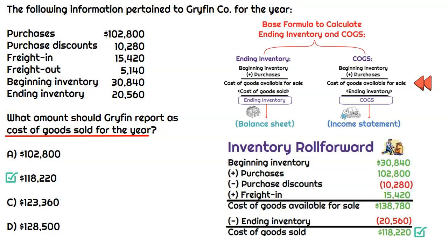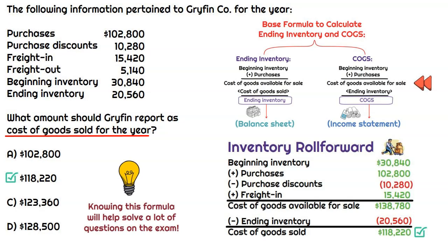That's how we can use the base method, also referred to as the inventory roll forward method, to calculate cost of goods sold. We really could use this to calculate anything in the question, depending on what information is provided. So make sure you understand how all of these pieces fit together — super important, and it will save you on the exam.